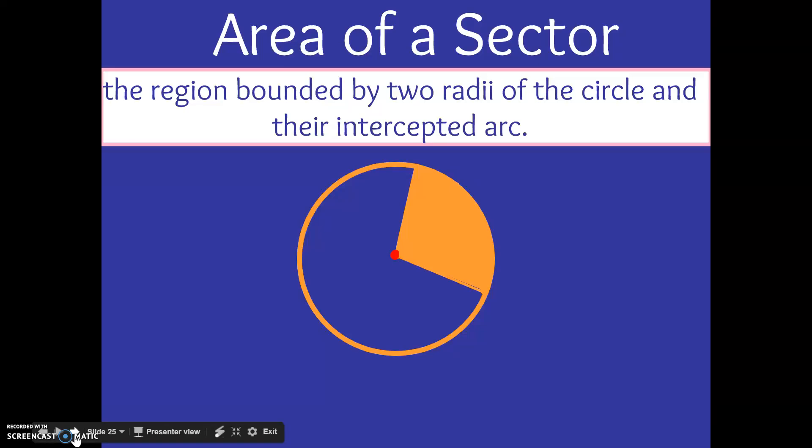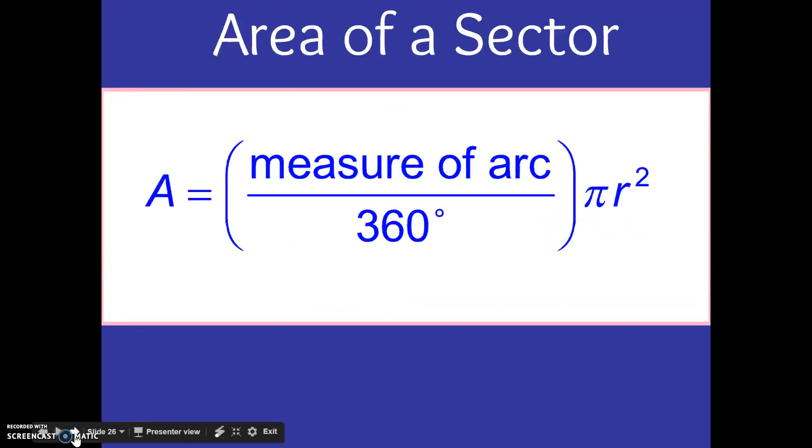The new equation is area of a sector. That is the region bound by two radii of the circle and their intercepted arc. So it's just that portion of the circle. Very similar equation going on here. The measure of the arc divided by 360 times pi times r squared.